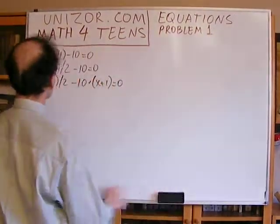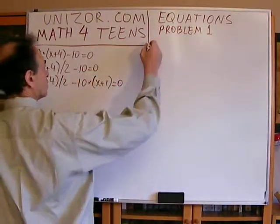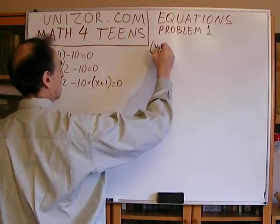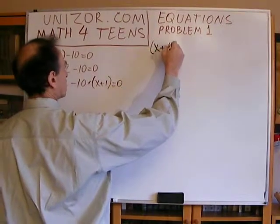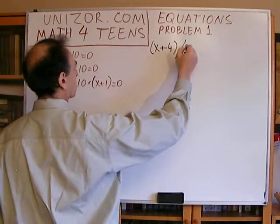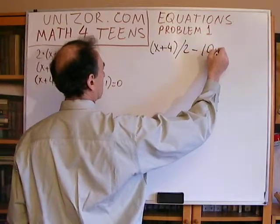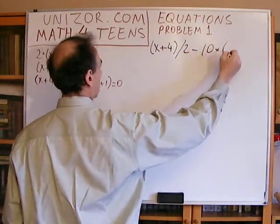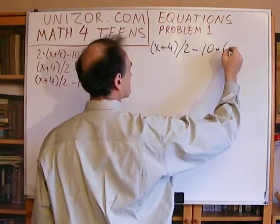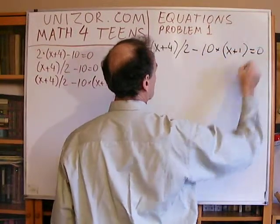Equation number 3: x plus 4 divided by 2 minus 10, multiplied by x plus 1, equals 0.